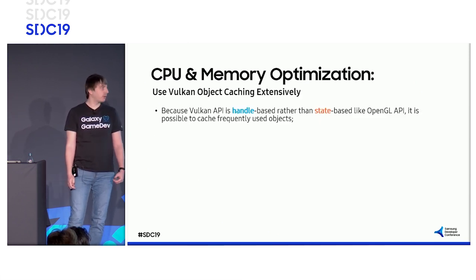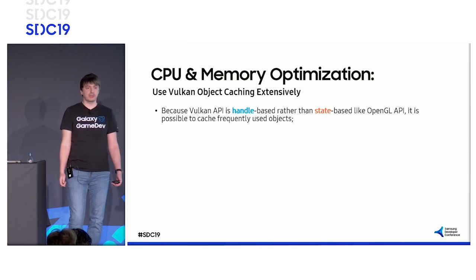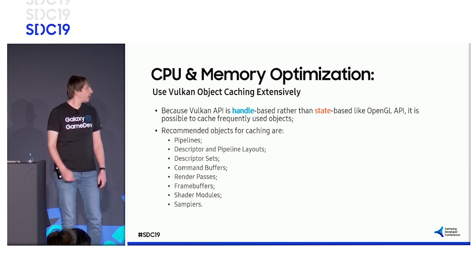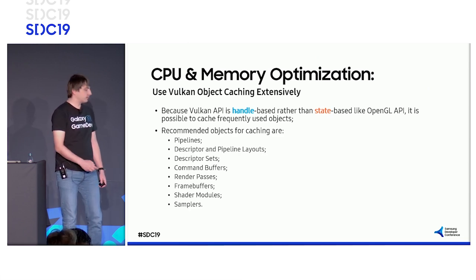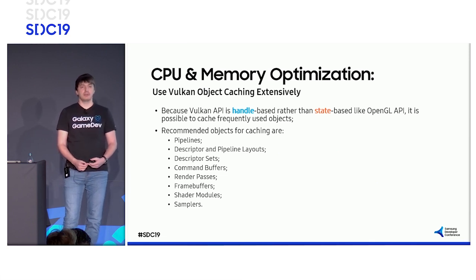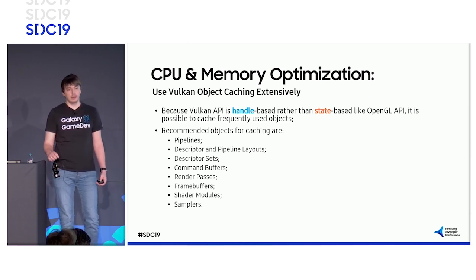As you may know, Vulkan is handle-based rather than state-based. This means that all states are stored in specific objects. Most of them are immutable, which is very good for caching. Here are the recommended candidates. We strongly suggest that you implement caches for these objects. This will save CPU time and memory resources. I will cover the most important items in the next slides.